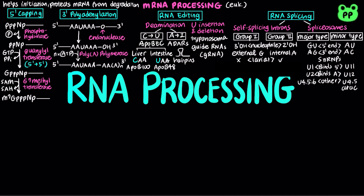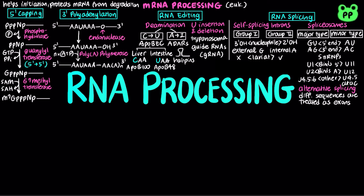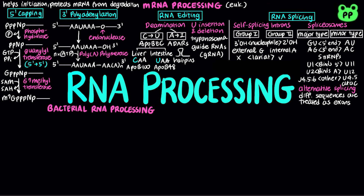Some genes can encode more than one kind of polypeptide, depending on which segments are treated as exons during RNA splicing. This is known as alternative splicing, which allows the same transcript to produce different proteins. Although bacterial mRNAs are generally not processed, bacterial ribosomal RNA and transfer RNA undergo RNA processing.